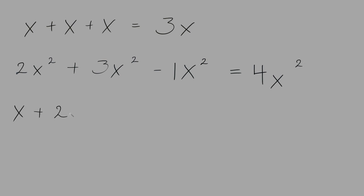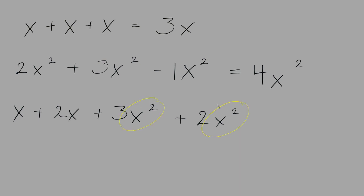x plus 2x plus 3x squared plus 2x squared. In the first two terms we have a variable x with no exponent — this makes them like terms. In the second two terms we have the variable x with the exponent of 2, which makes these like terms. We will place a number 1 in front of the variable x where there is no coefficient. We can add the coefficients for the terms that are alike: 1 plus 2 is 3.